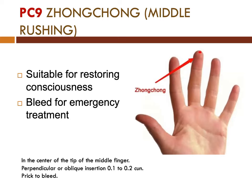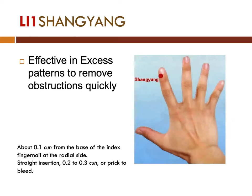Next point is Pericardium-9. This point is suitable for restoring consciousness and is also bled for emergency treatment. It is in the center of the tip of the middle finger. Needling is done perpendicularly or obliquely, 0.1 to 0.2 cun, or prick to bleed. Next point is LI-1. This point is effective in excess patterns to remove obstructions quickly. It is about 0.1 cun from the base of the index fingernail at the radial side. Needling is done through straight insertion, 0.2 to 0.3 cun, or prick to bleed.